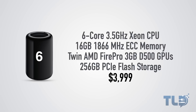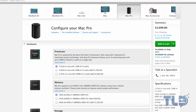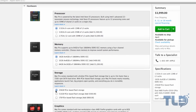Going over the specs: the 6-core obviously has fewer cores but is clocked higher at 3.5 GHz, configured with 16 GB of RAM, TwinFire Pro D500 GPUs, and 256 GB of PCIe flash storage. The 8-core model has more cores but at a lower clock speed of 3.0 GHz, configured with 32 GB of RAM, TwinFire Pro D700 GPUs which have 6 GB of VRAM versus the 3 GB on the D500s. Coming from 256 GB on the 6-core up to 512 GB on the 8-core was definitely nice.